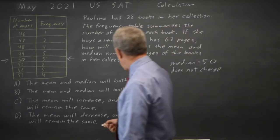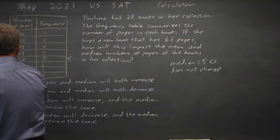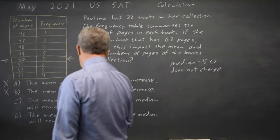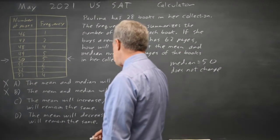Choice A says both mean and median increase, which is not true. Choice B says both decrease, which is not true. The median remains the same as choice C and D.